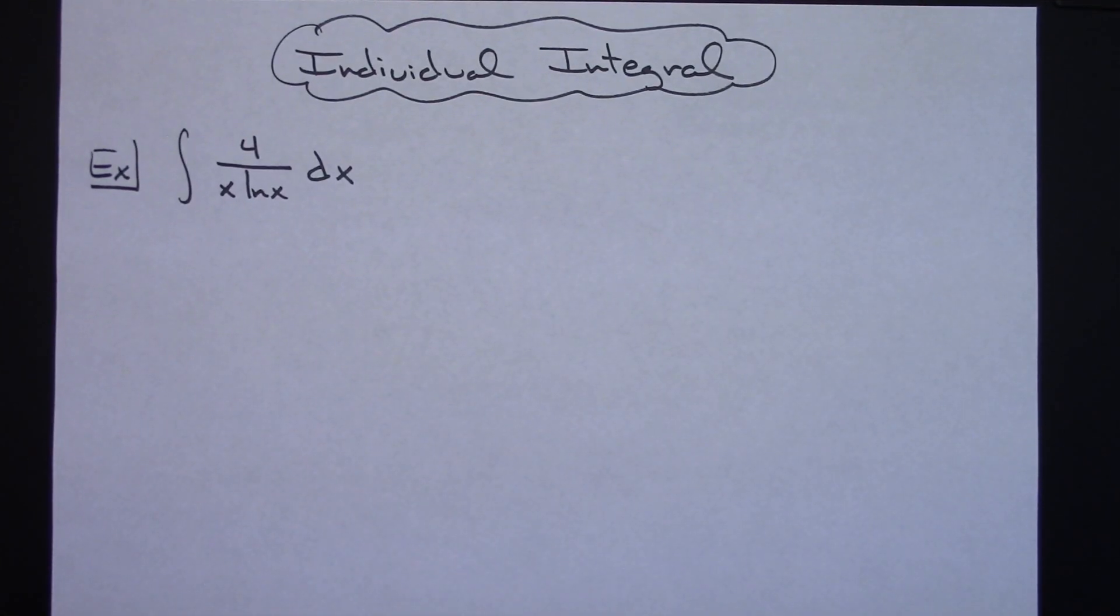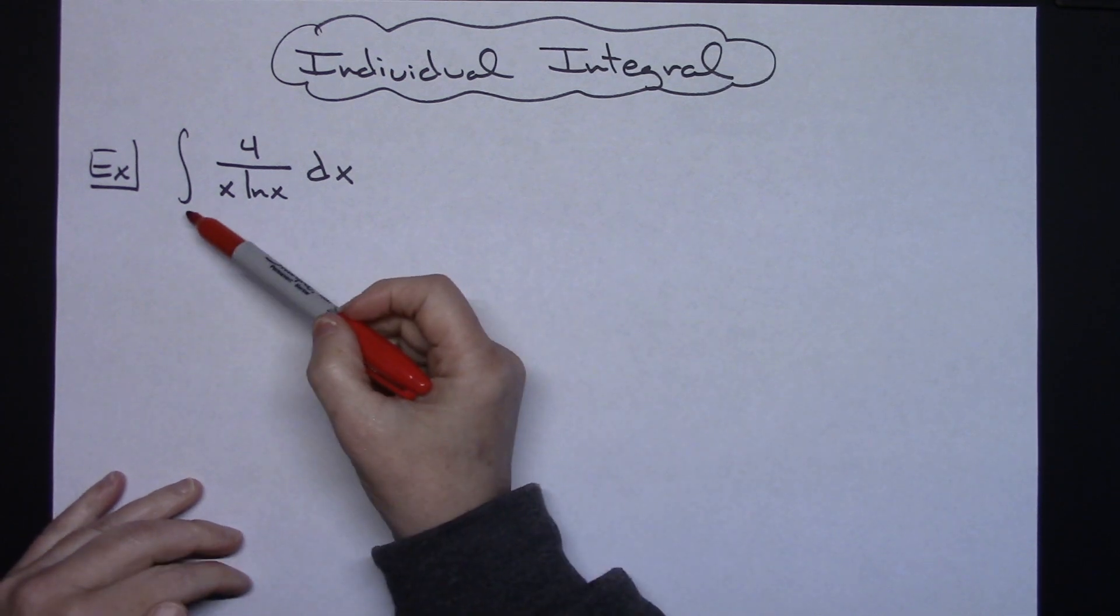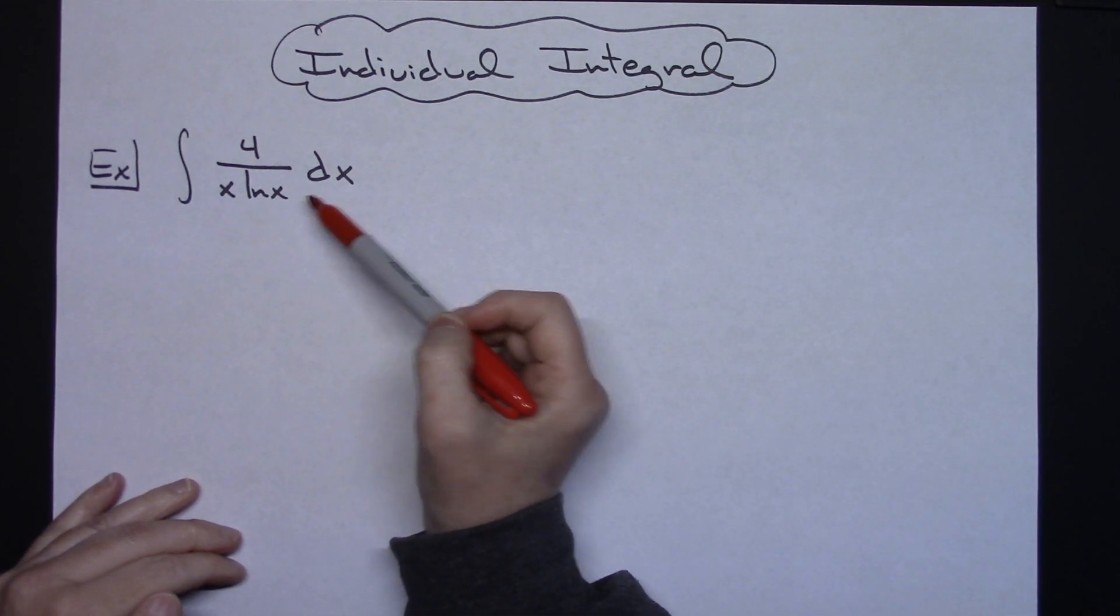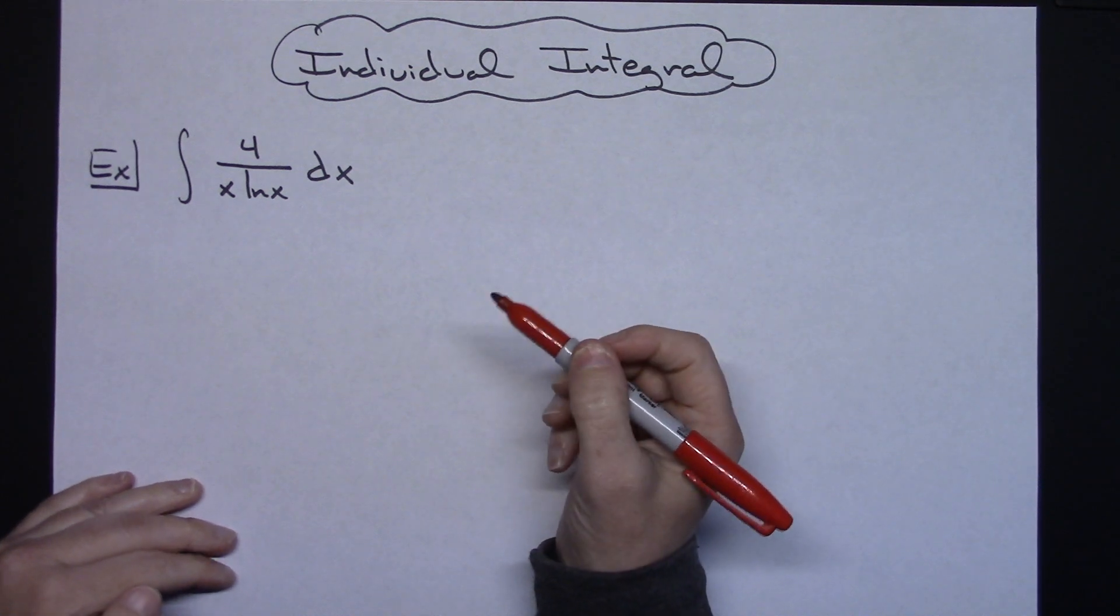In this video I'm going to be working out an individual integral. We're going to take a look at the integral of 4 over x natural log of x dx. It's going to be a straightforward u substitution.